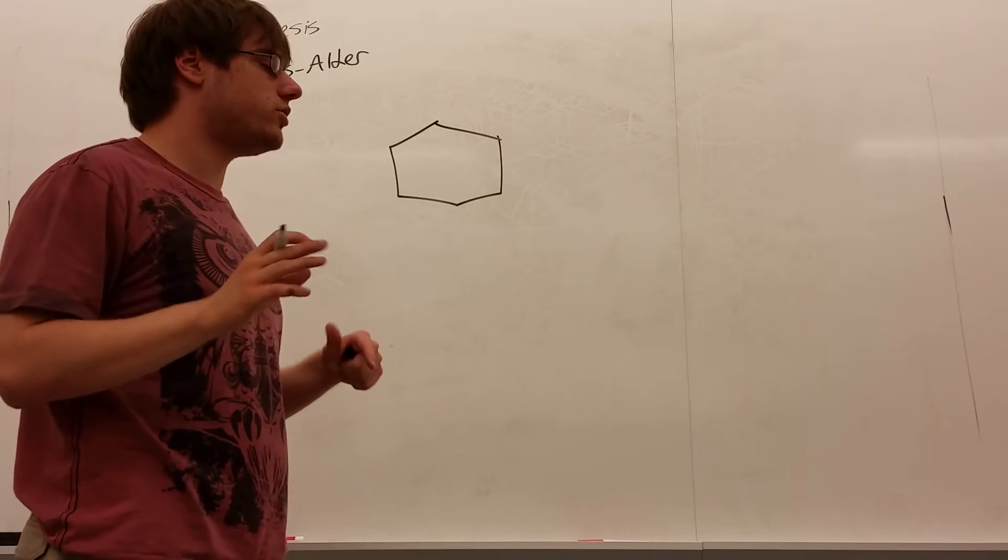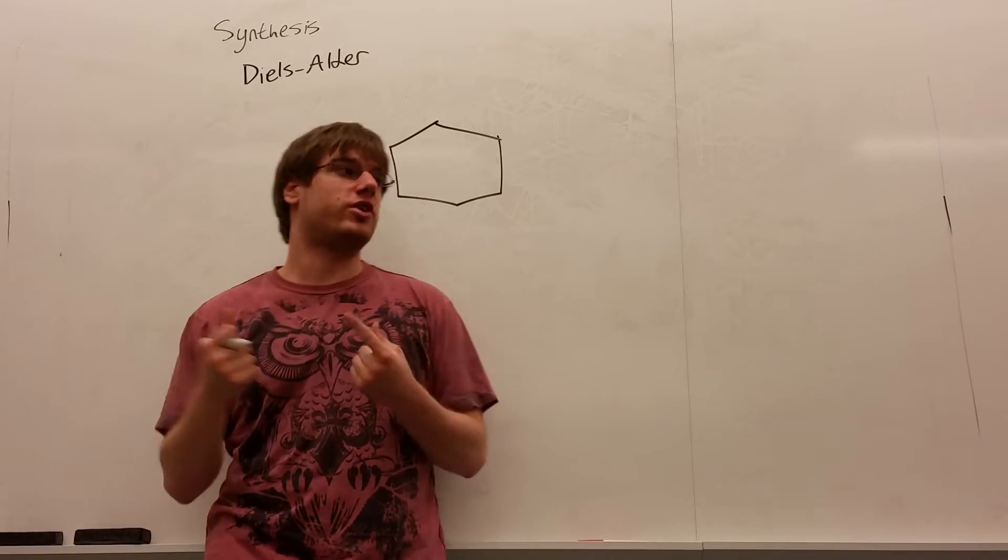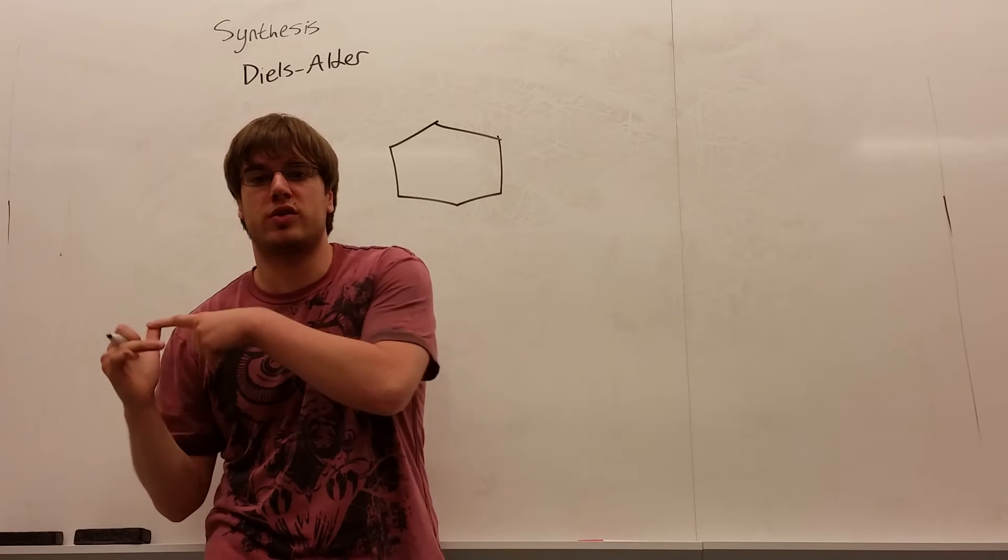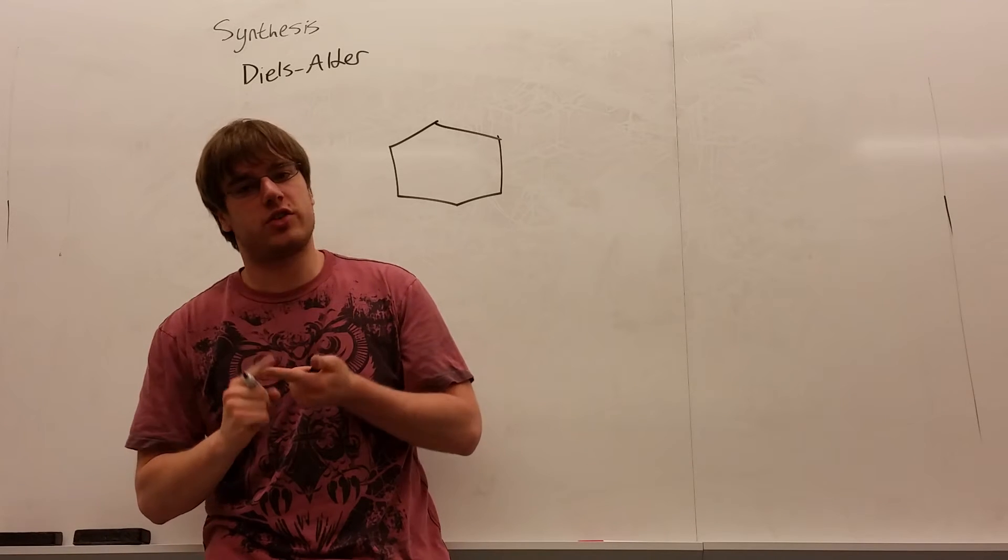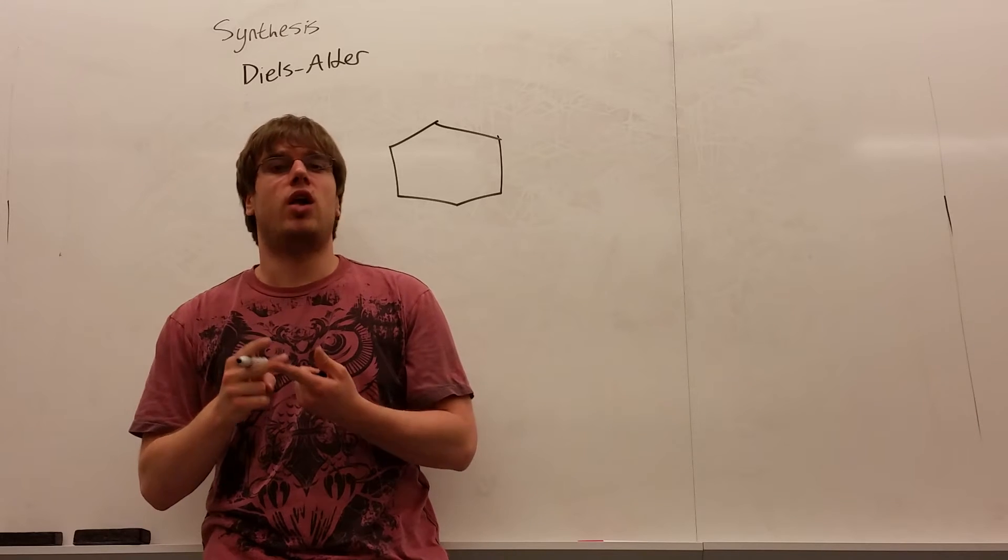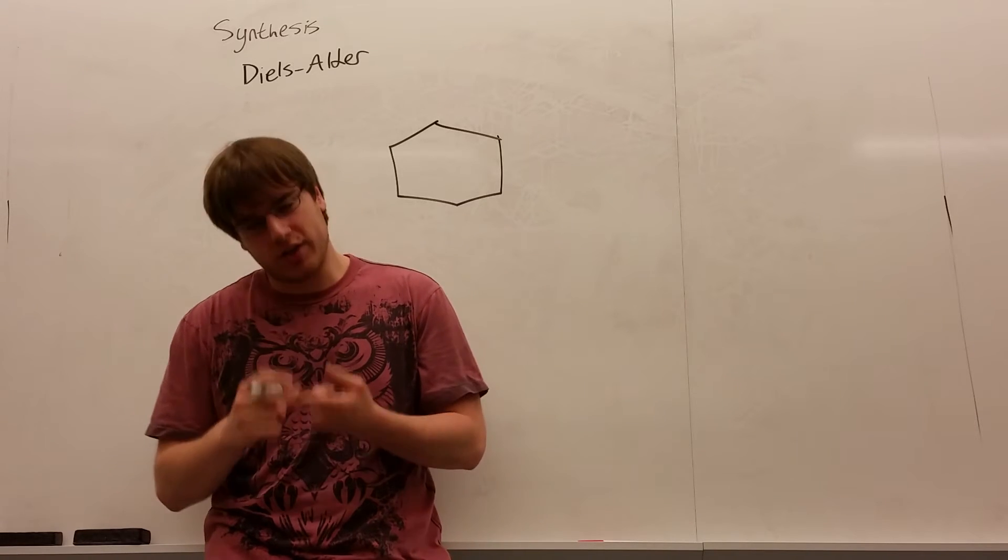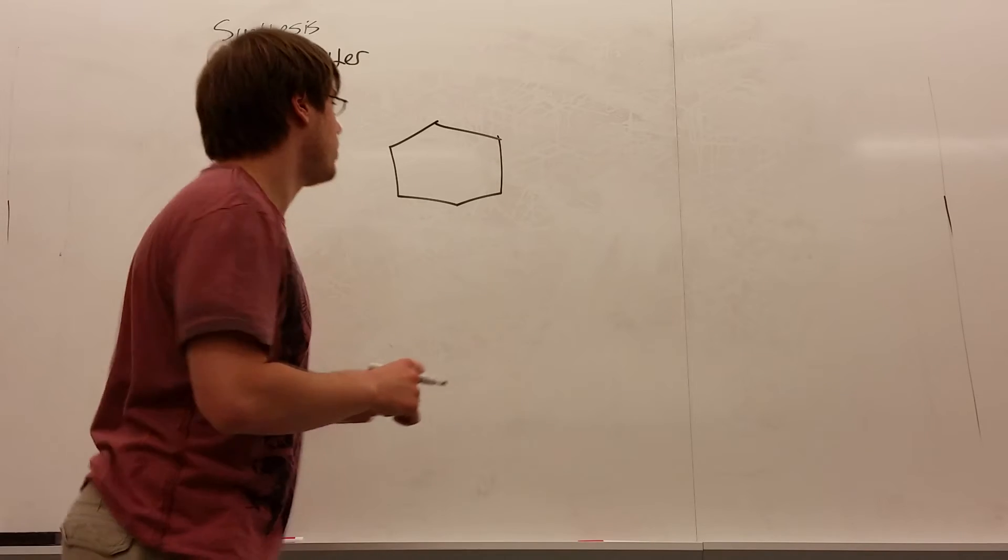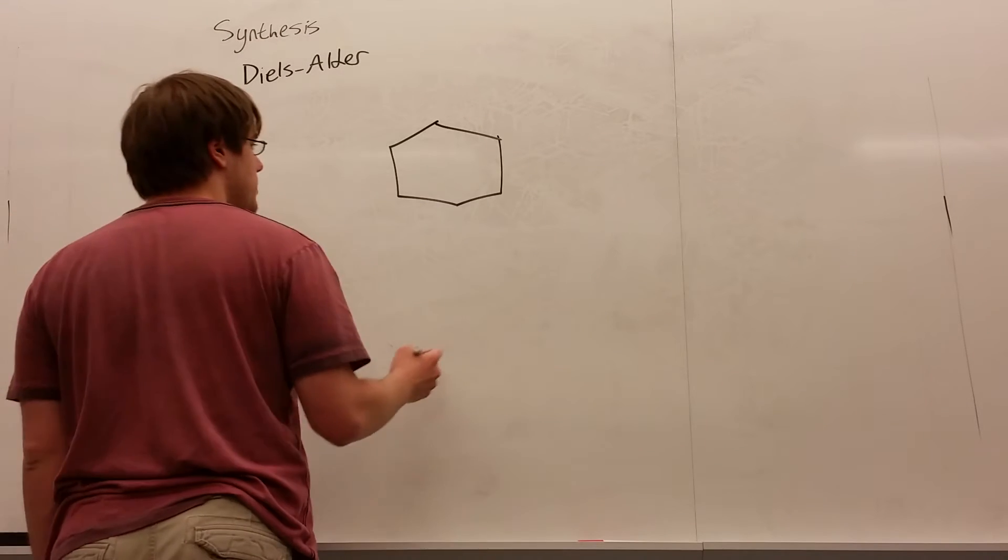So there are one of four reactions that allow you to do that. Other reactions that make six-membered rings being the Robinson annulation, which was from exam 3, the olefin metathesis reaction, which was from exam 3, and the malonic ester synthesis reaction, which was also from exam 3. But for exam 1, this is your go-to reaction for making six-membered rings.